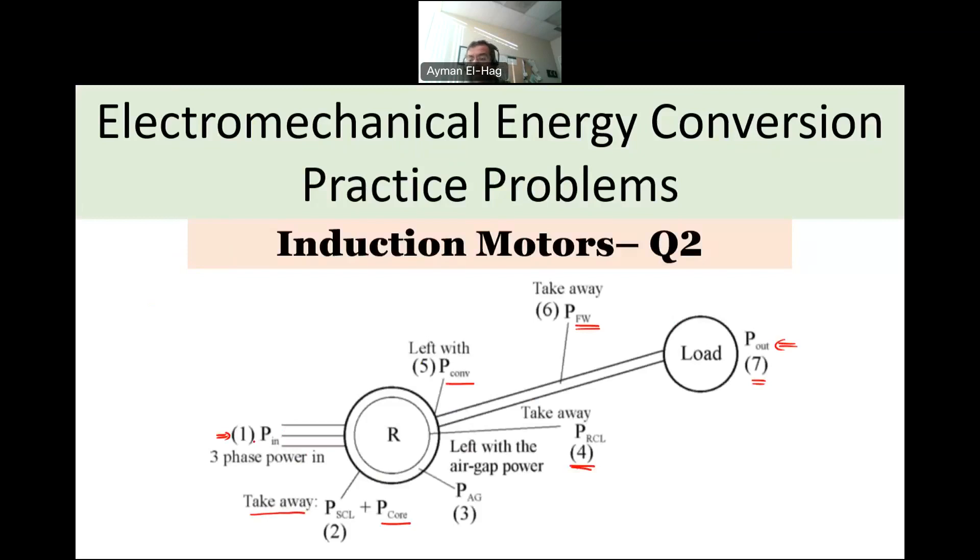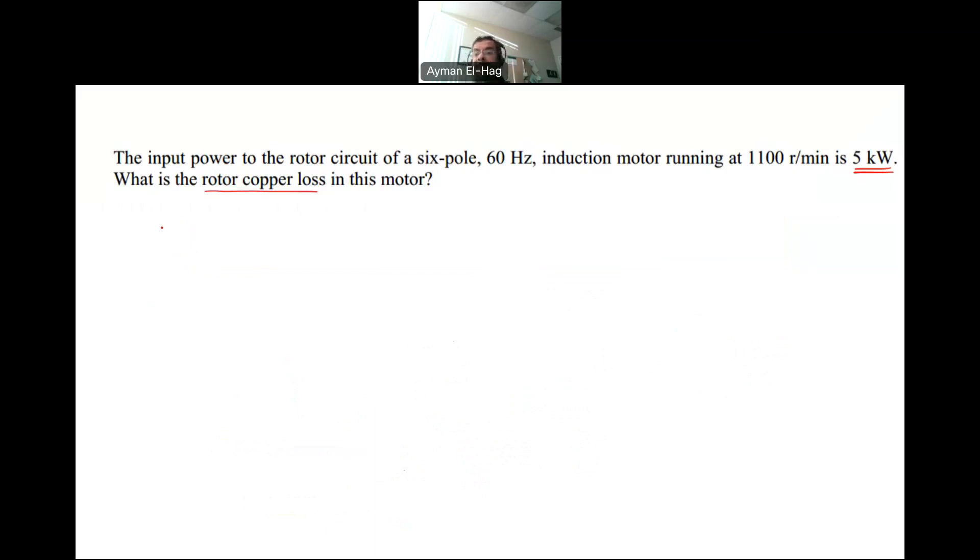The input power to the rotor circuit. Let's come here. We have the PN. This PN is the input to the stator, but the input to the rotor is basically nothing but PAG. So what we are giving here, the air gap power, although it's not saying that explicitly, but this, what does it mean? So we have the PAG is equal to the 5 kilowatt. And then we have that the motor is running at 1100 RPM. So basically, we are giving NM. This is the shaft or the rotor speed, 1100 RPM.